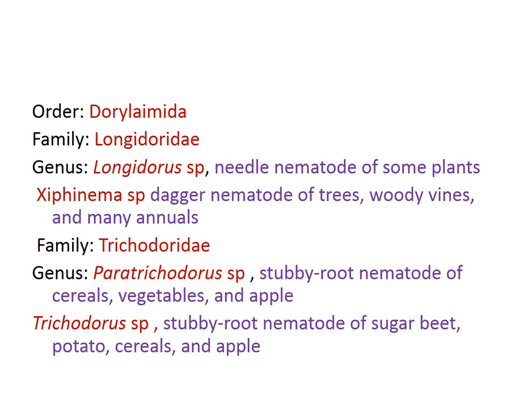The next order is Dorylaimida. Coming into Dorylaimida, we have the family Longidoridae with genus Longidorus — the longest nematode genus, called the needle nematode. It infects various crops and is an ectoparasitic nematode. Xiphinema is also ectoparasitic and is called the dagger nematode because its stylet is shaped like a dagger. It infects trees, grasses, and various other crops.